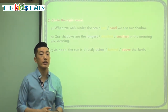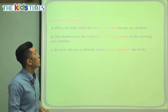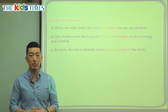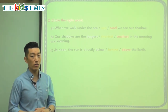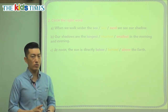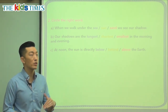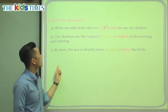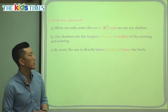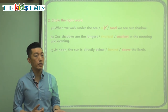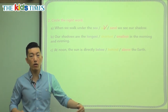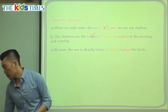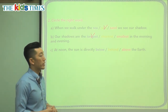Let's look at the last part and choose the correct answer. When we walk under the sea, under the sun, or under the sand, we see our shadow. If we walk under the sea, you probably won't see a shadow because the sun cannot reach the bottom of the ocean. Under the sand would also be a strange place — no sun comes through sand. So the correct answer is: if you walk under the sun, you will see your shadow. Our shadows are the longest, shortest, or smallest in the morning and evening? We said shadows are long when the sun is farther away, which happens in the morning and evening — so our shadows are the longest in the morning and evening.